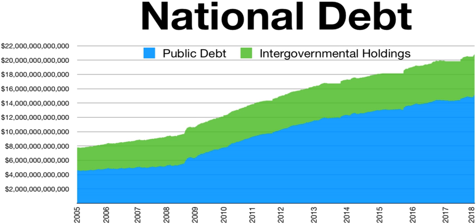The U.S. has never fully defaulted. In April 1979, however, the United States may have technically defaulted on $122 million in Treasury bills, which was less than 1% of U.S. debt. The Treasury Department characterized it as a delay rather than a default, but it did have consequences for short-term interest rates, which jumped 0.6%. Others view it as a temporary, partial default.